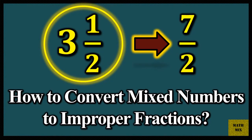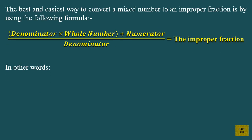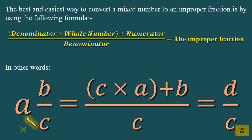How to convert mixed numbers to improper fractions. The best and easiest way is by using the following formula: the denominator times the whole number plus the numerator over the denominator equals the improper fraction. In other words, a and b over c equals c times a plus b over c, which equals d over c.